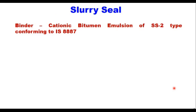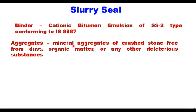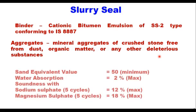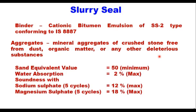The binder for slurry seal is cationic bitumen emulsion of slow setting type 2 conforming to IS 887. Mineral aggregates of crushed stone free from dust, organic matter or any other deleterious substances are to be used. The aggregate should satisfy physical requirements: sand equivalent value minimum 50, water absorption not more than 2%, and soundness when tested with sodium sulphate in 5 cycles less than 12%, and with magnesium sulphate solution maximum 18%.